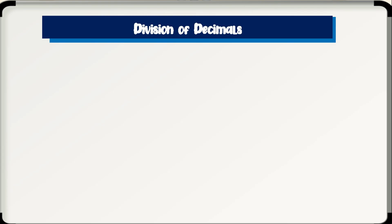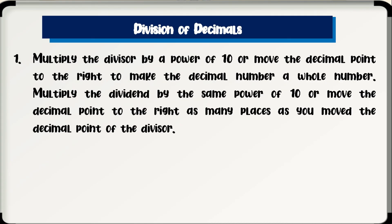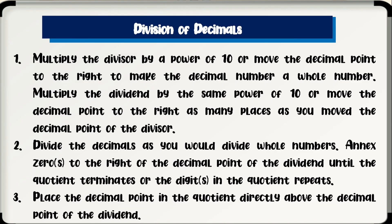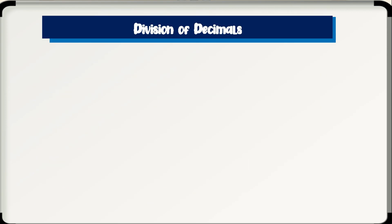And to end our discussion today, let's have the division of decimals. To divide decimals, follow these steps. Number 1: multiply the divisor by a power of 10 — or move the decimal point to the right — to make the decimal number a whole number. Multiply the dividend by the same power of 10, moving the decimal point to the right as many places as you moved the divisor's decimal point. Number 2: divide the decimals as you would divide whole numbers, annexing zeros to the right of the decimal point of the dividend until the quotient terminates or the digits repeat. Lastly, place the decimal point in the quotient directly above the decimal point of the dividend.